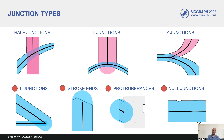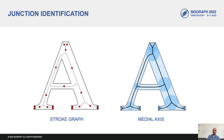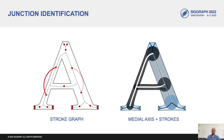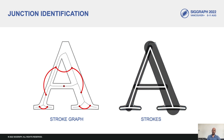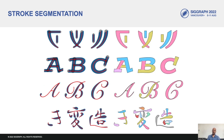Note that L junctions, stroke ends, protuberances and null junctions effectively prune the medial axis while also taking stroke semantics into account. We identify junctions within an iterative procedure that operates on a stroke graph, having one vertex for each medial axis branch. Adding an edge to the stroke graph joins two branches into one stroke, while discarding a vertex removes a branch. Once this procedure is terminated, we have the inferred stroke decomposition of the outline. We tested our method on hundreds of fonts and in most cases it produces plausible segmentations.